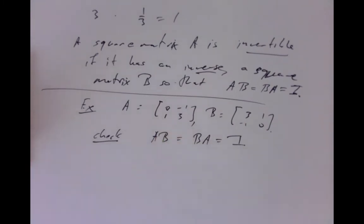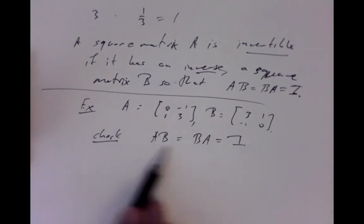At least so far, we have to check both multiplications, because we know that A times B and B times A are generally not the same thing.